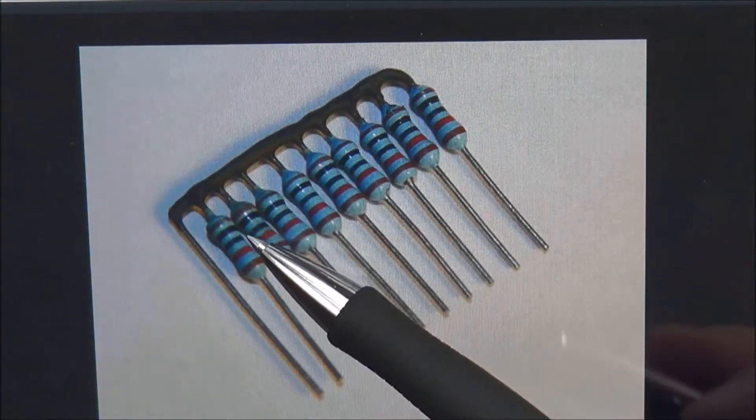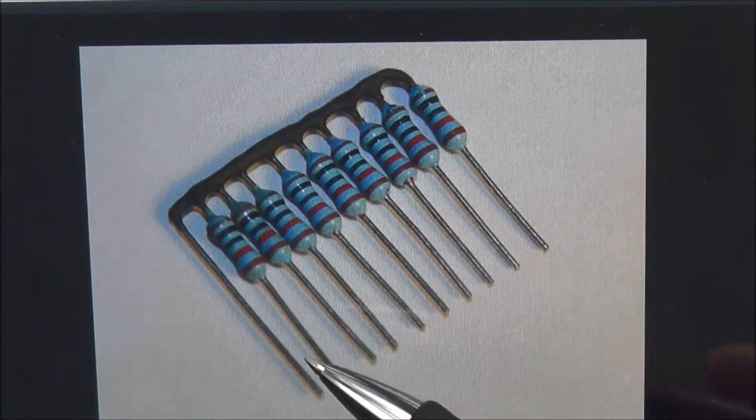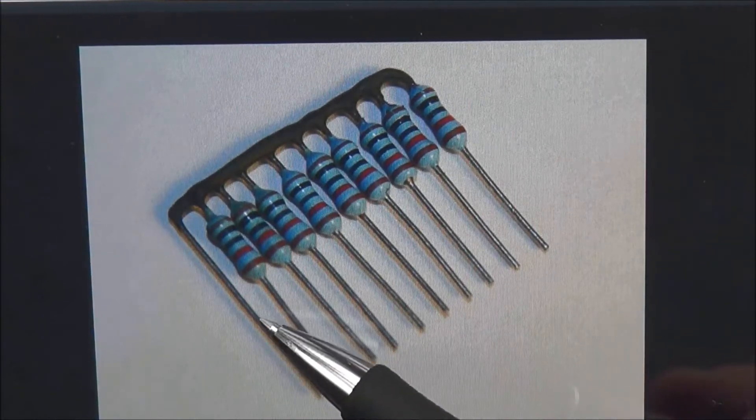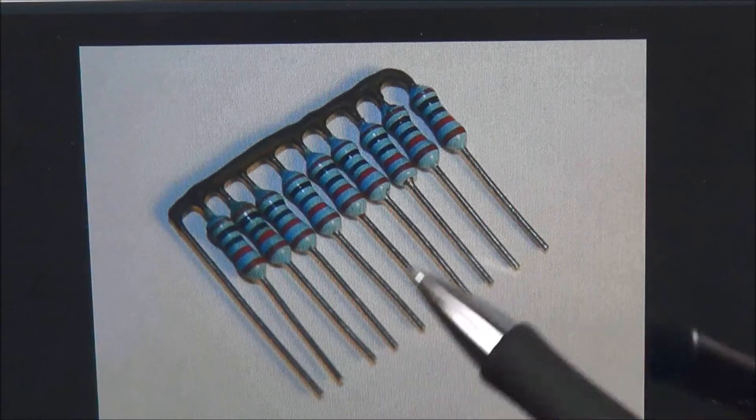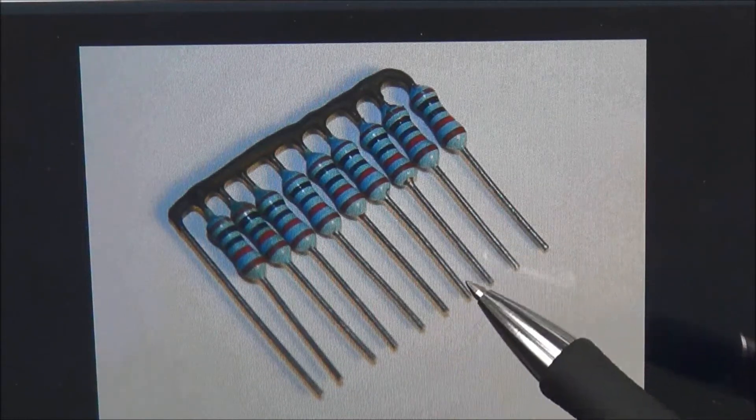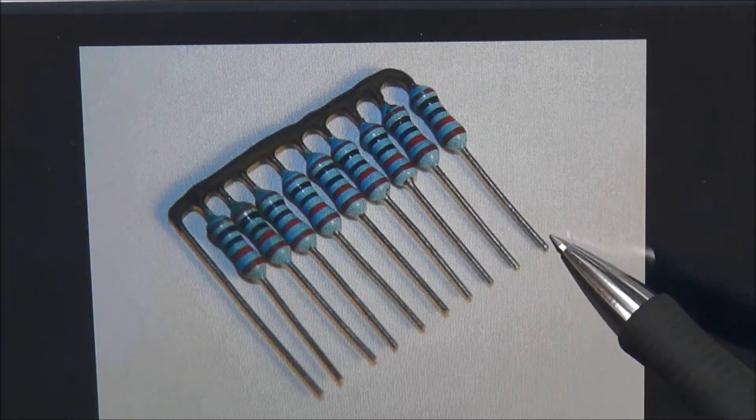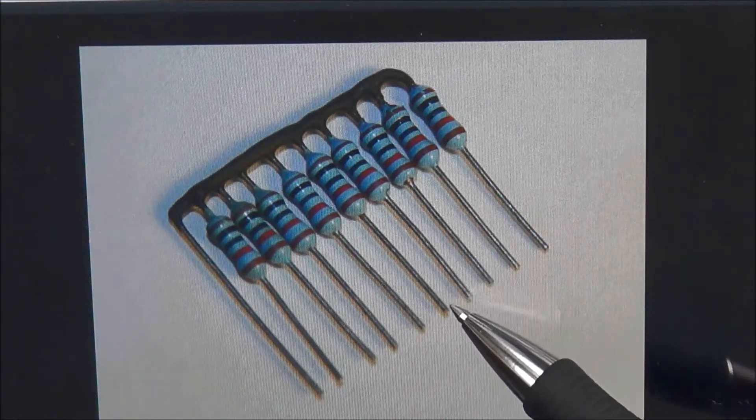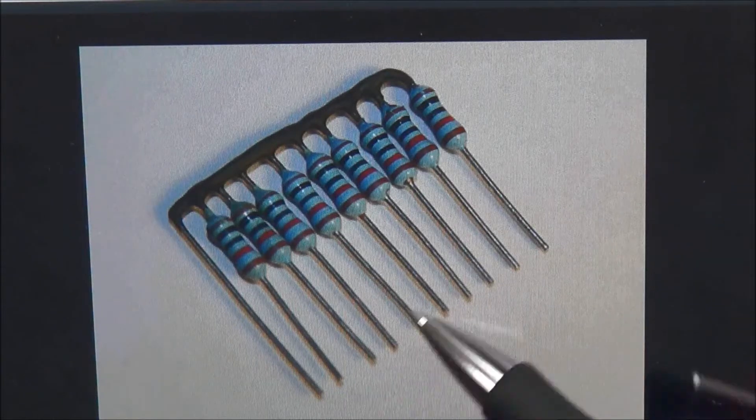So instead of using all these leads here, you just have one lead here. You could do something like connect the negative of the power supply to this lead and then the positive side of the power supply would be on this side here. In our case, we're going to connect LEDs to each one of the resistors on this side here.